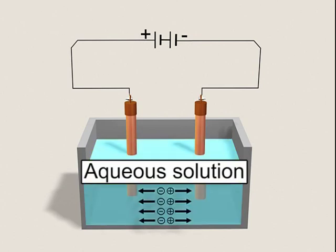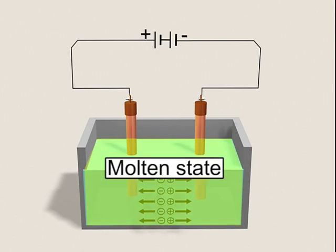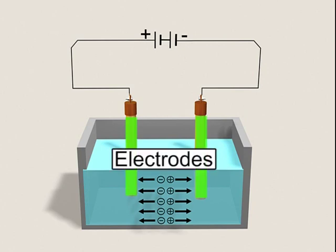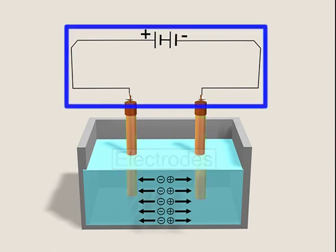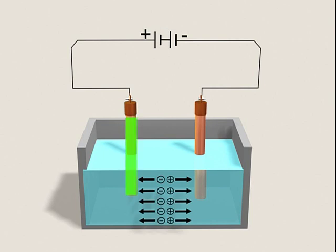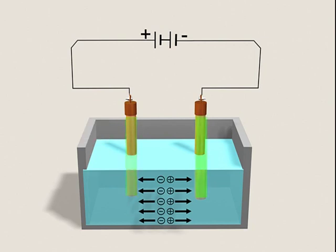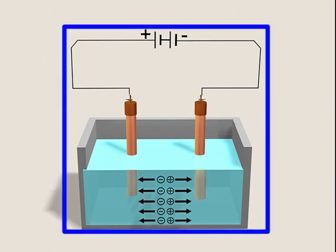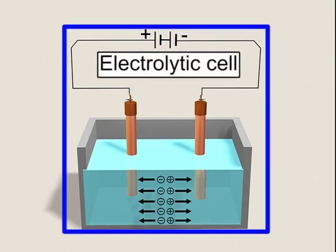The aqueous solution or the molten state of the electrolyte is taken in this cell. Two metallic rods or plates called electrodes are immersed in the electrolyte and connected to the terminals of a battery. The electrode connected to the positive terminal is called the anode, while the one connected to the negative terminal is known as the cathode. The cell prepared in this manner is called an electrolytic cell.